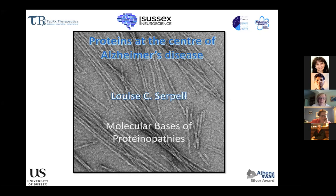Louise and the team used fibre diffraction to analyse the cross-beta structure of amyloid fibrils from different patient samples, giving us those early views of the polymorphism of amyloid fibrils from a whole variety of diseases. Following that, Louise really went on to pioneer the use of X-ray diffraction to understand the cross-beta structure of amyloid in atomic detail, providing some of the first all-atomic models of the cross-beta structure of amyloid in peptides using fibre diffraction methods.